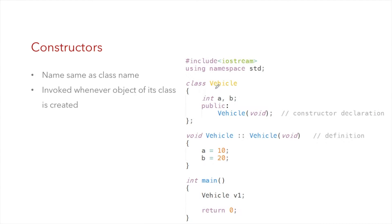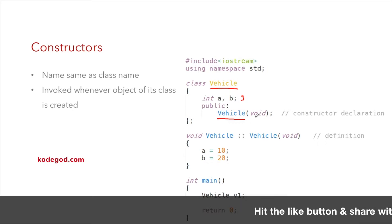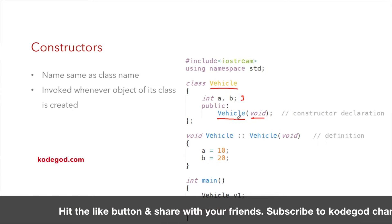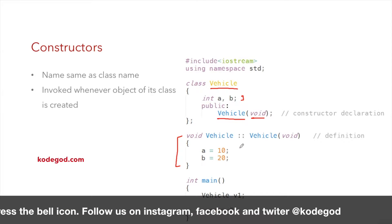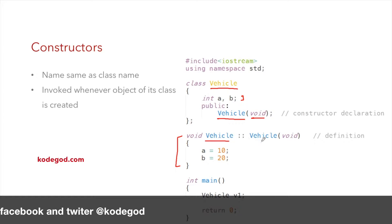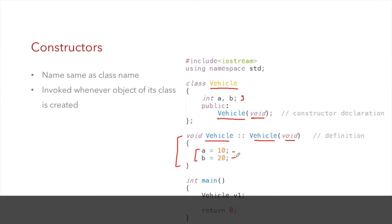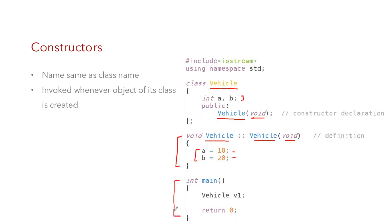Let's understand constructors with an example. I have a class called 'vehicle' with two integer variables a and b, and a constructor named 'vehicle' with no parameters. This is the constructor declaration. Similar to function definitions for public member functions, we can have function definitions for constructors too. Here the class name and constructor name are the same. I'm initializing these two variables with values 10 and 20. In main, I create object v1 of type vehicle — v1.a is initialized to 10 and v1.b to 20.